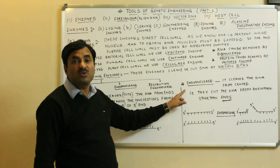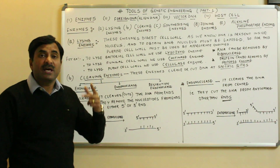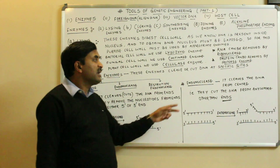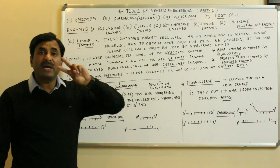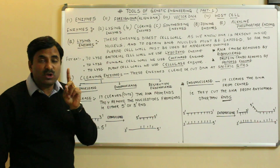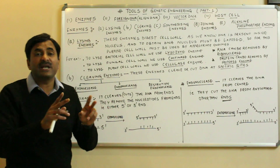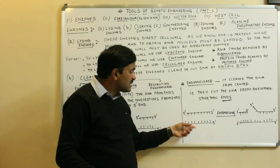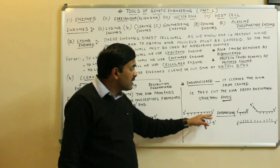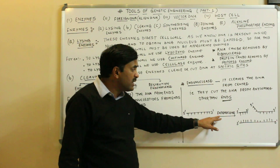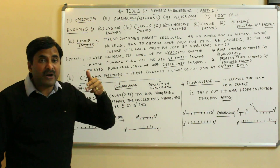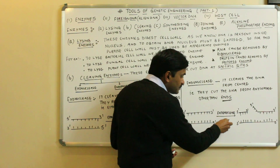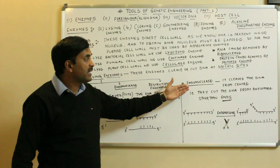Endonucleases, as the name indicates, cleave the DNA from the center. They cut the DNA from anywhere other than the ends — not from the 5' or 3' end, but from within. As shown in the diagram of a double-stranded DNA, the endonuclease enzyme has not cut the DNA at the ends; it has cleaved the DNA from the center.